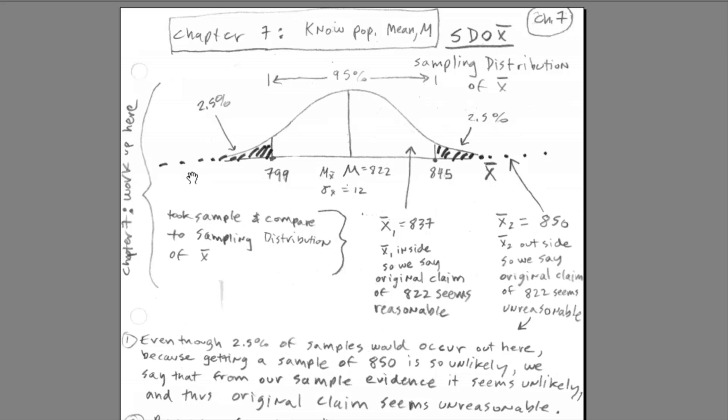That allowed us to take a sample and compare our sample to the sampling distribution of X bar. So if we went out and got a sample of $837, that lies within this range here. So we assume that the original claim is reasonable. In essence, we say $837, that's just sampling error. So we'll assume that the original value seems reasonable.